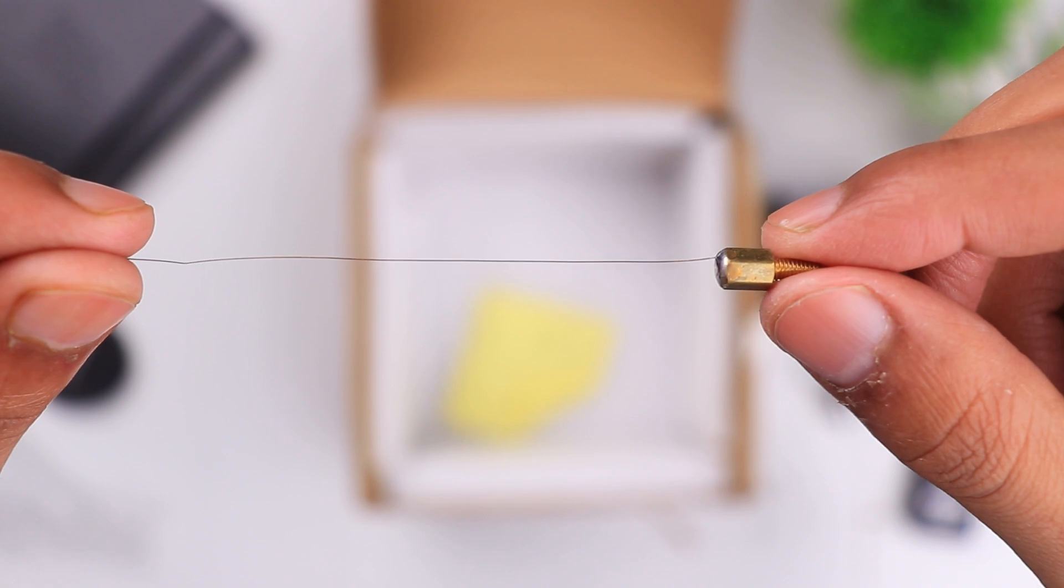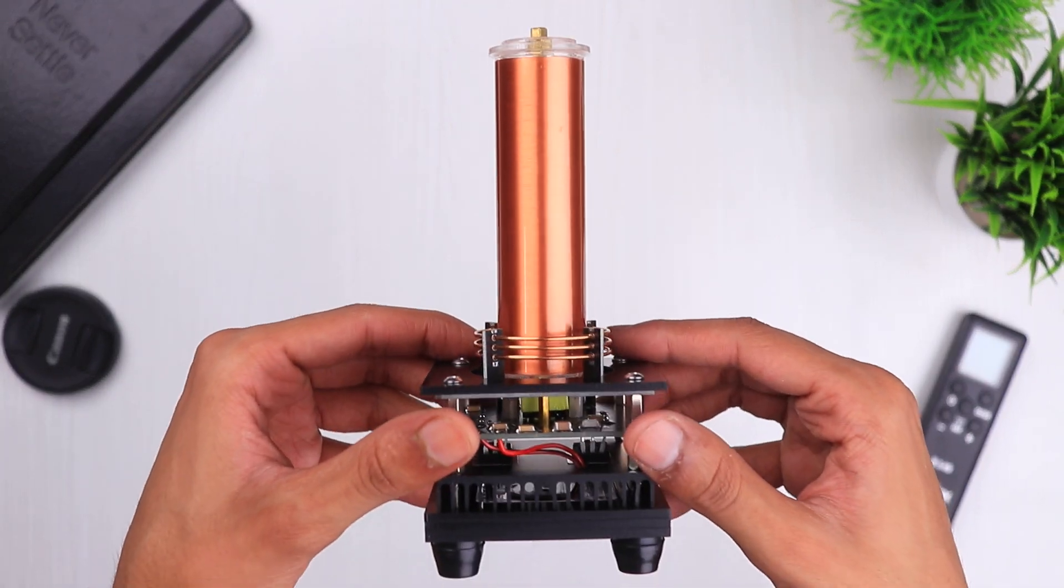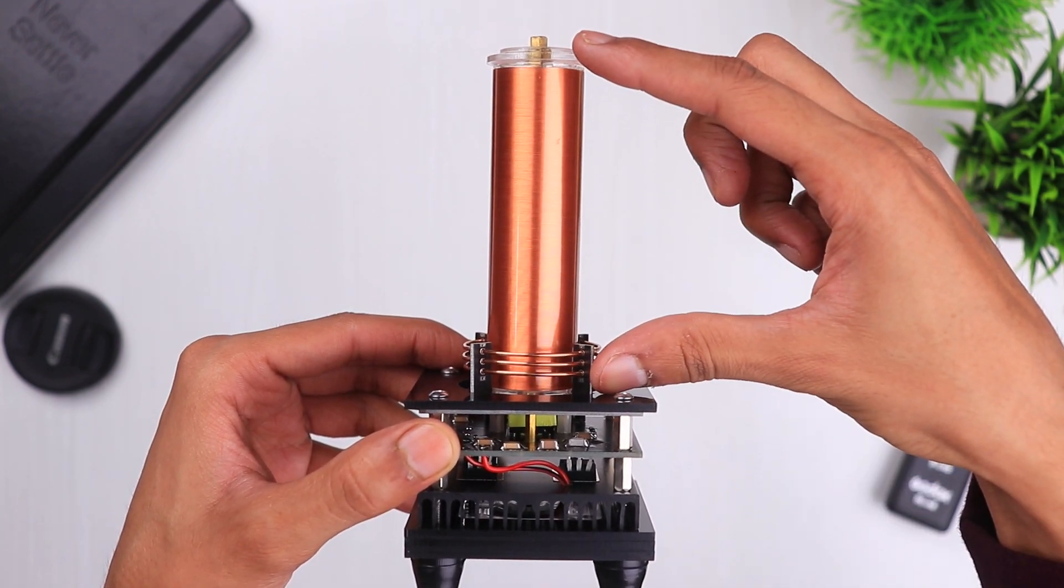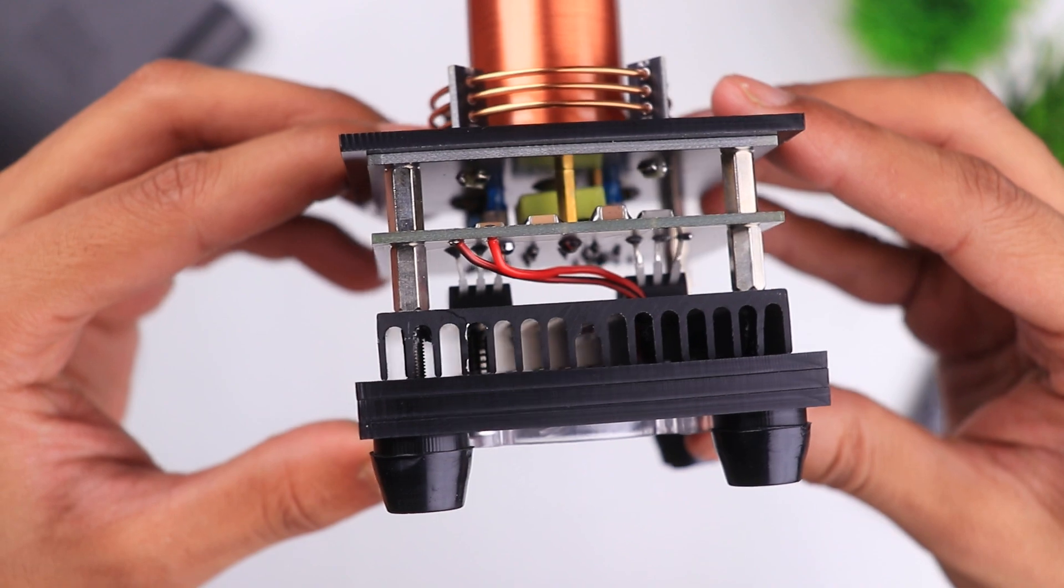Let's have a detailed look at our Tesla coil. Here is the copper winding which is about 9 to 10 centimeters tall. Beneath it is a circuit board which houses many small parts and a radiator.